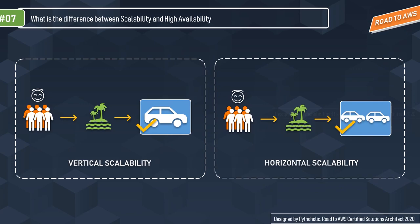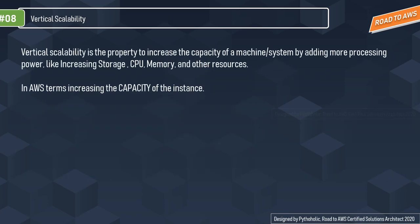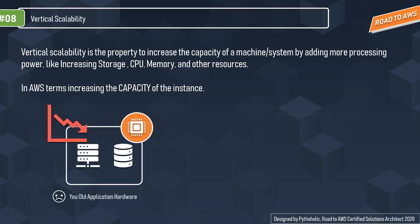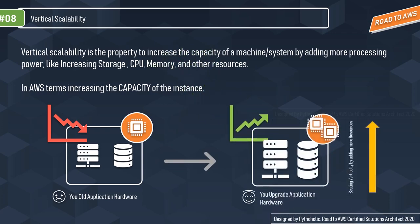In the second example, we hired another car — now two cars for seven people. Horizontal scalability means adding multiple resources aligned to work together as a single logical unit. In a clustered environment, you add multiple instances to increase capacity. Vertical scalability is the property to increase a machine's capacity by adding CPU, storage, memory — in AWS terms, increasing the instance size.